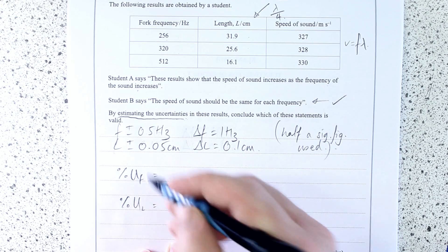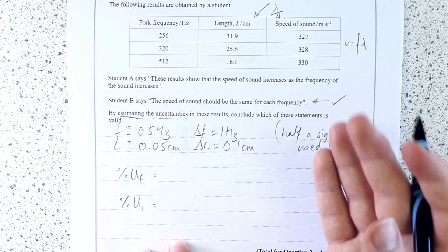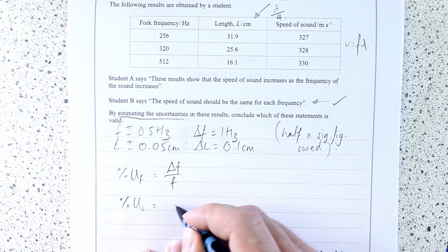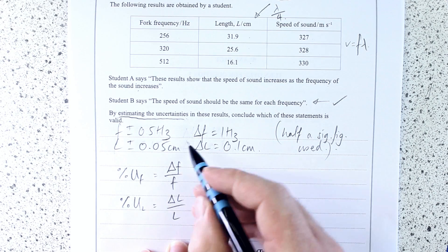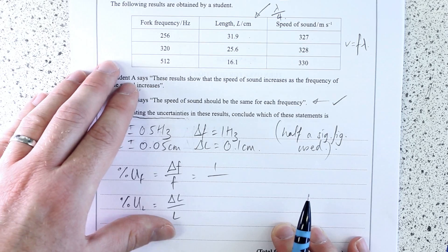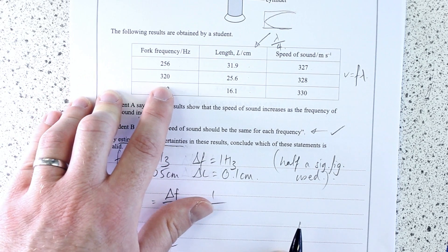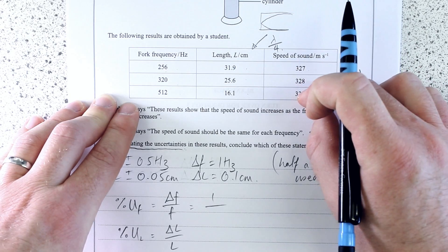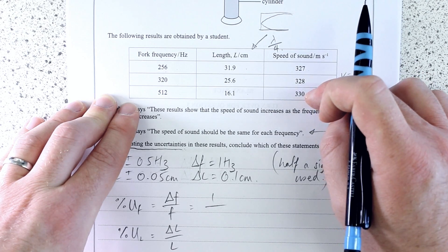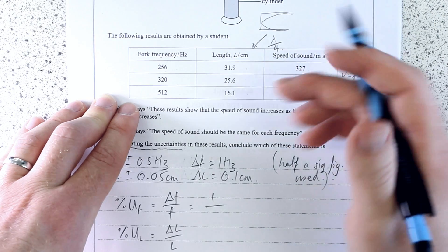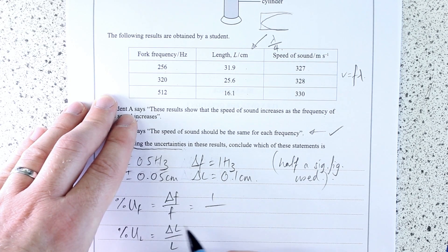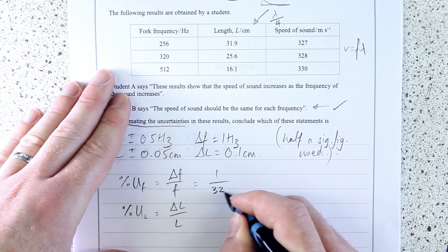This is a skill they are definitely going to be testing in this exam, and it's not tricky either. The percentage uncertainty in frequency is delta F over F, and the percentage uncertainty in length is delta L over L. Delta F we've decided is 1 hertz. Now which frequency value should we use? It makes sense to use one right in the middle, because we're trying to work out whether all the values lie within the uncertainty of this middle reading. If you've got a range of results, use the middle one. So I'm going to do 1 over 320.